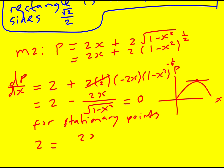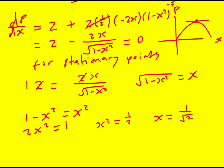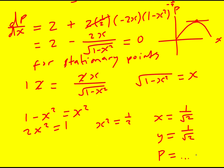Dividing through by 2 gives root 1 minus x squared equals x — which is just y equals x, confirming the same solution. Squaring both sides: 2x squared equals 1, so x squared equals one-half, and x equals 1 over root 2. Ignoring negatives since x is positive, we also get y equals 1 over root 2. Substituting back into the perimeter formula gives p equals 2 root 2 again.